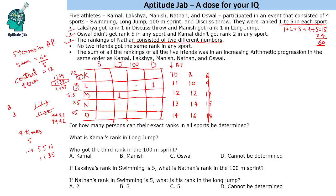However, if both Manish (5,5,1,1) and Laksh (1,1,3,5) use all four rank-1 slots, then no rank 1 remains for Laksh's known rank 1 in discus throw — which contradicts the given information. So this AP case is eliminated.